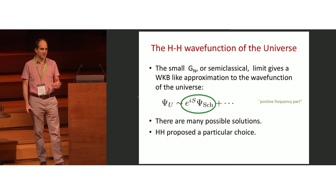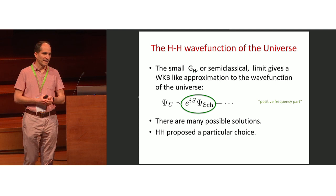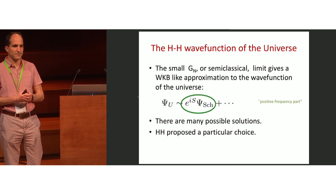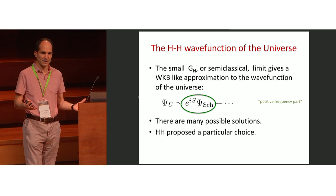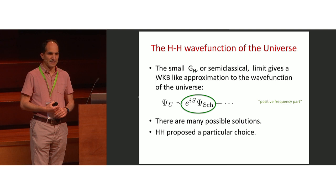When we do a small coupling or semi-classical expansion in gravity, we think that the answers we get should correspond to a WKB-like approximation to a wave function of the universe. You can think of this as the positive frequency part of the solution of a kind of Klein-Gordon equation, which would be the Wheeler-DeWitt equation. We don't know the precise form of that equation in full quantum gravity, but ordinary semi-classical gravity should be an approximation of roughly this kind.